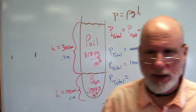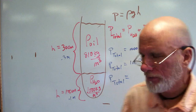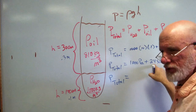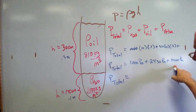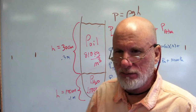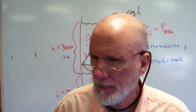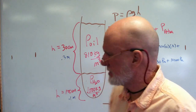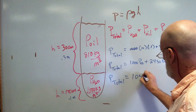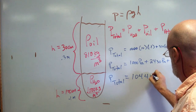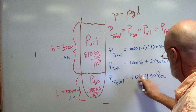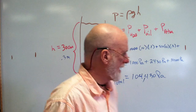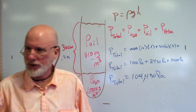Adding them all together: 1,000 plus 2,430 plus 101,000 equals 104,430 Pascals total.